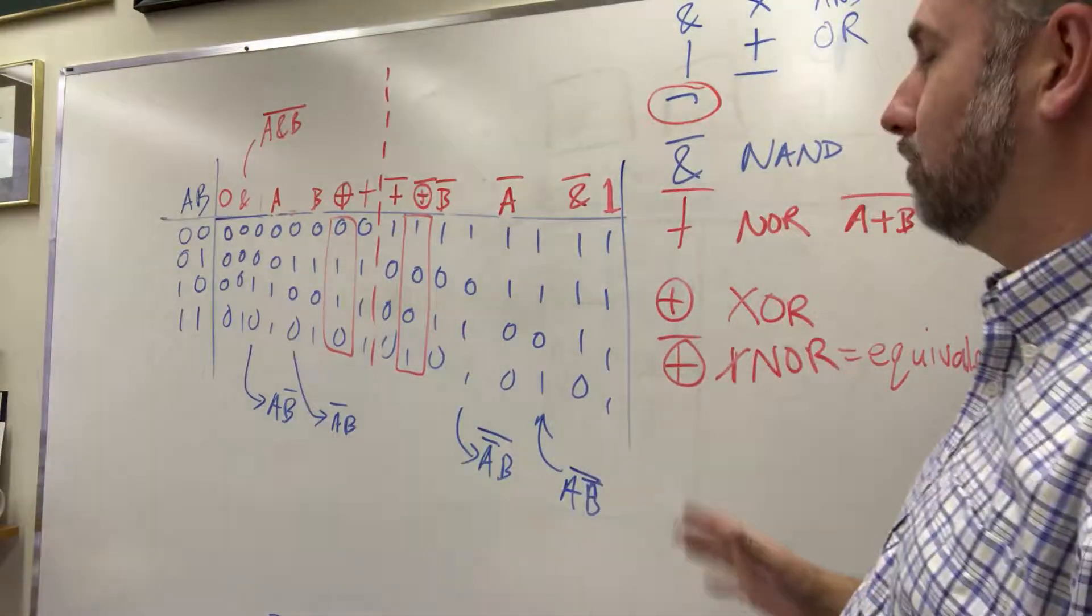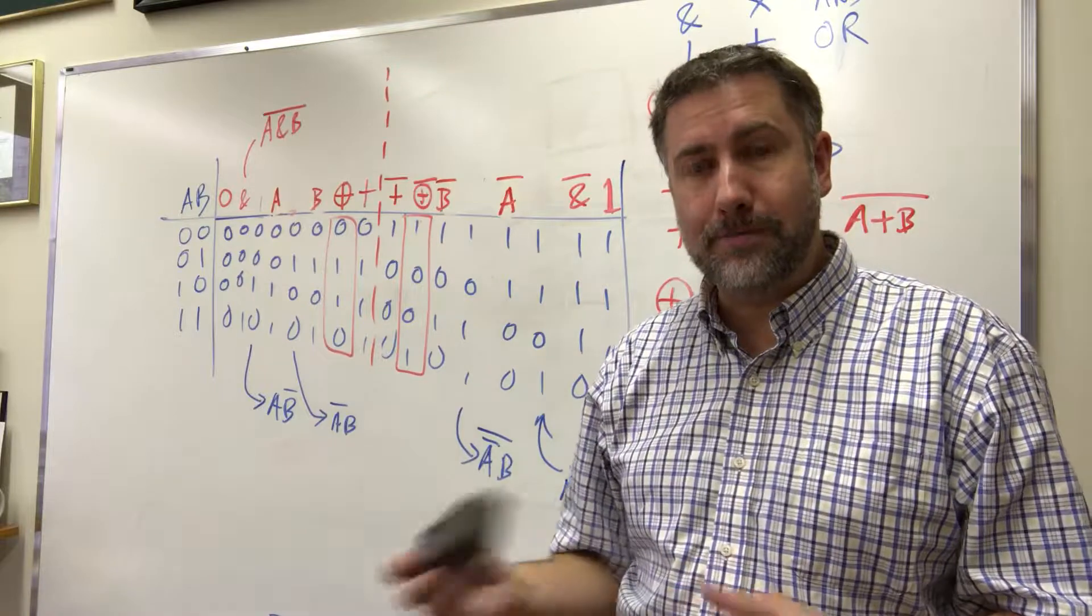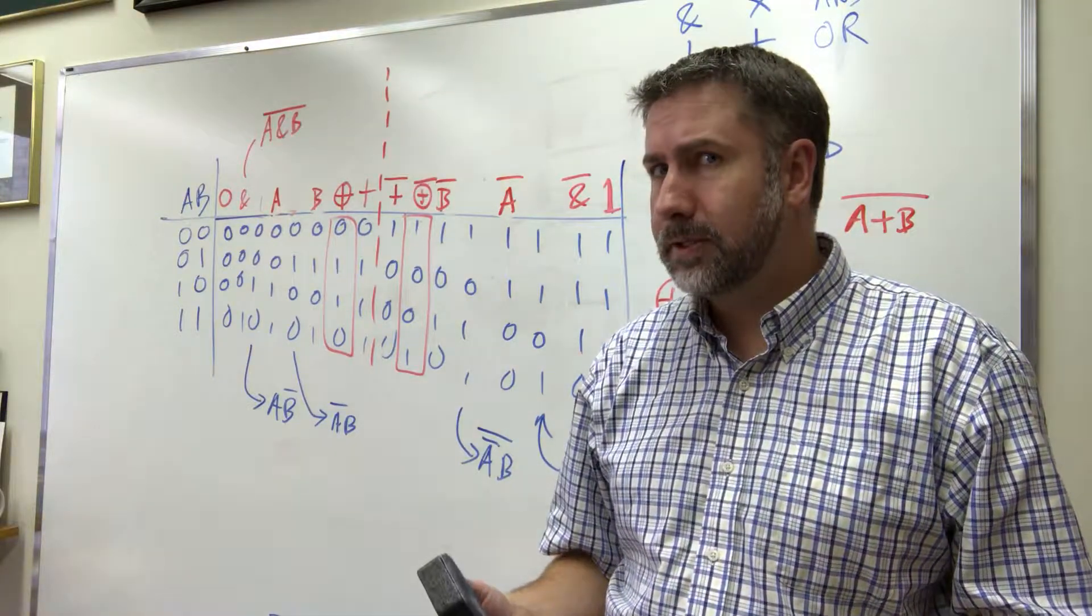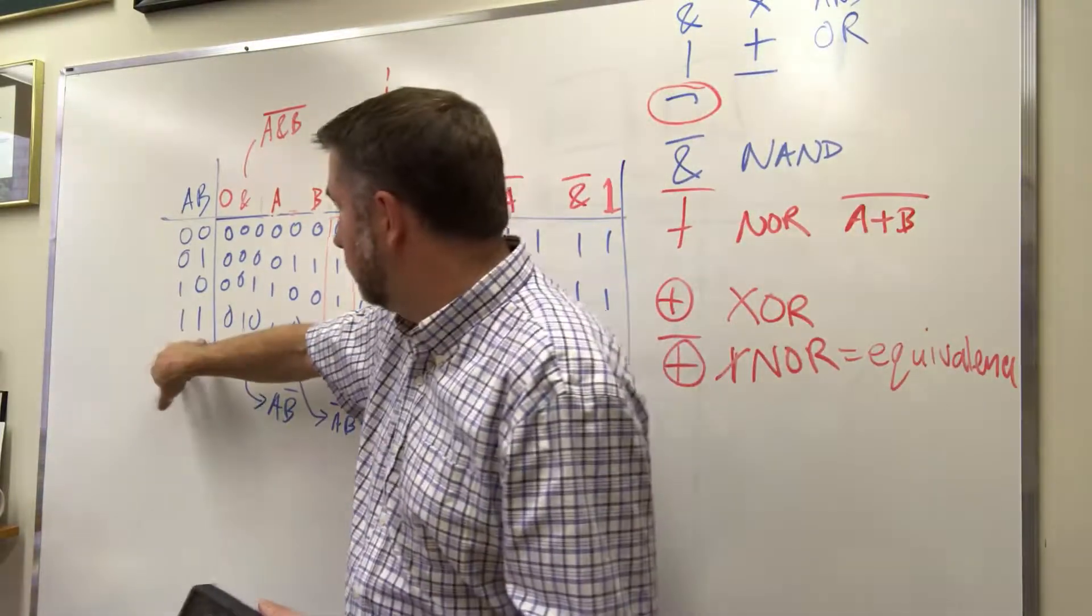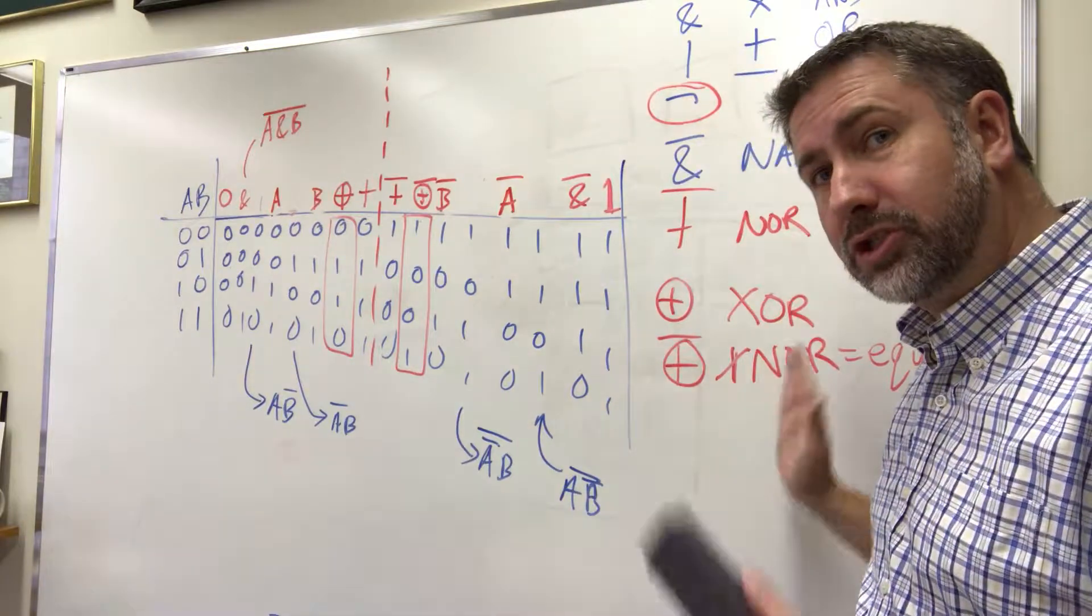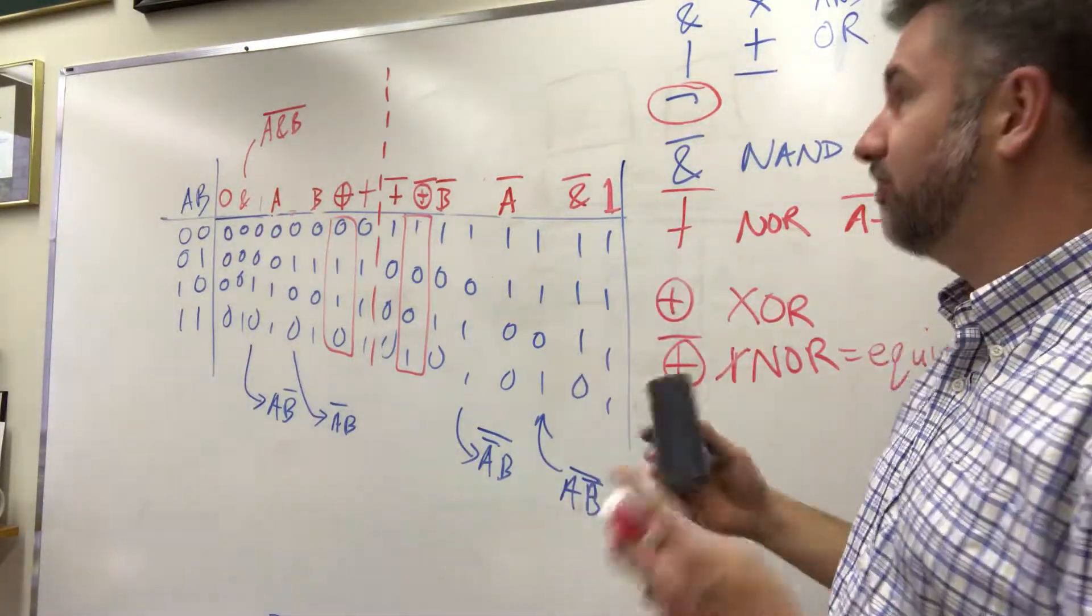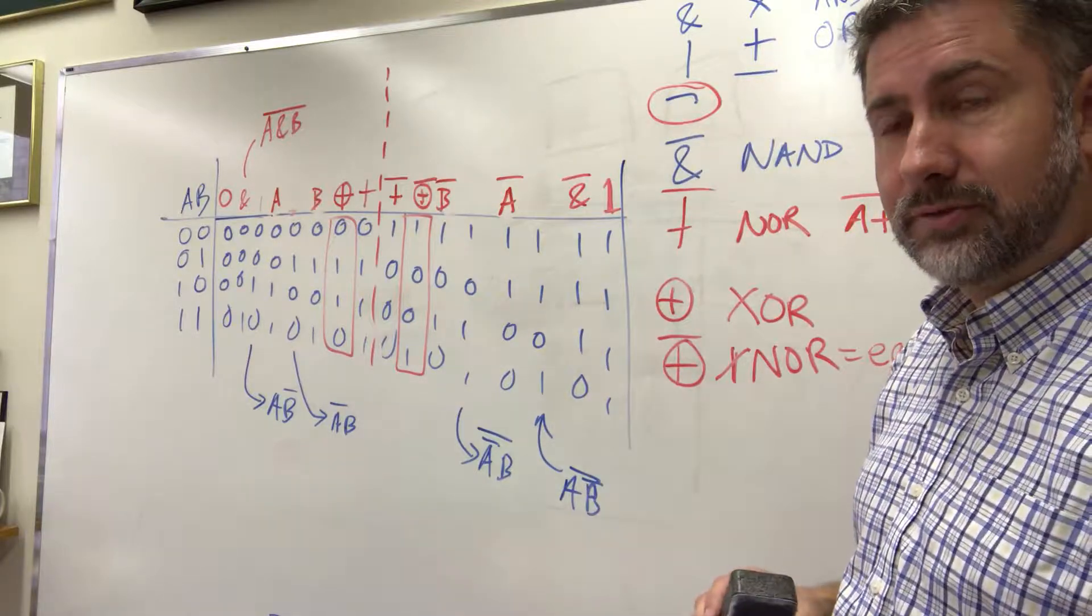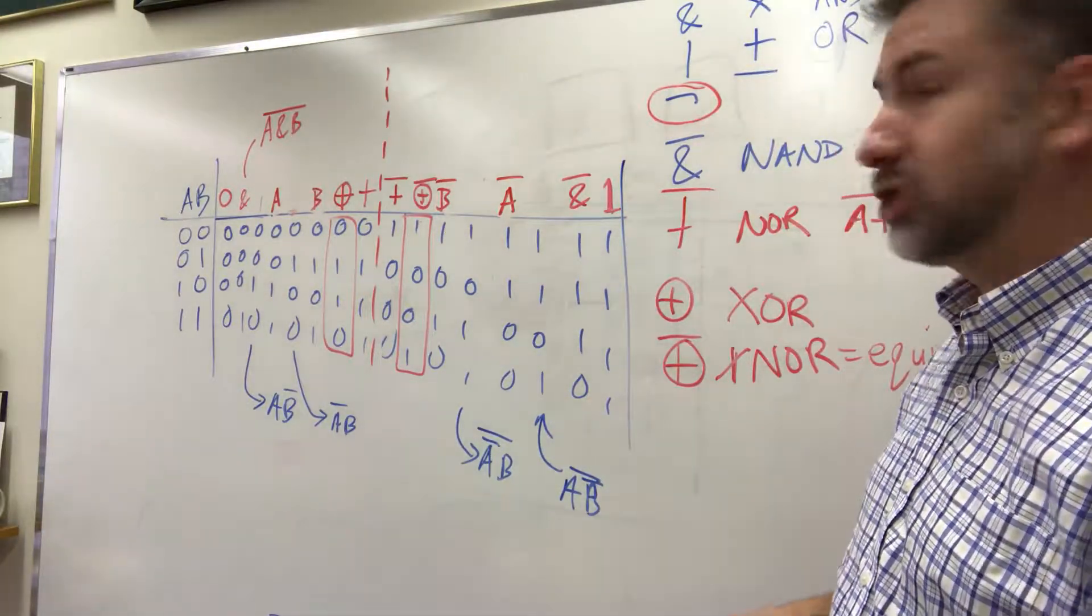So these are the 16 possible functions of two variables. Now we can look at all the possible functions of three variables. How many would there be? Well if we had three variables, there's eight combinations. So there would be 2 to the 8 possible functions, which is 256 possible functions. A system of three variables has far more functions than a system of two - exponentially more, a double exponentially more functions as you might expect.